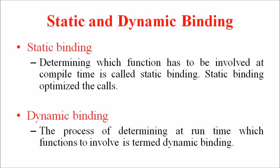Next, we are discussing static and dynamic binding. Determining which function has to be invoked at compile time is known as static binding. Static binding optimizes the calls, for example a function call. The process of determining at runtime which function to invoke is termed as dynamic binding. Dynamic binding occurs when a polymorphic call is issued. It allows some method invocation decisions to be deferred until the information is known — for example, a cut operation in an edit submenu, which passes the cut operation to any object on the desktop, each of which handles the message in its own way.